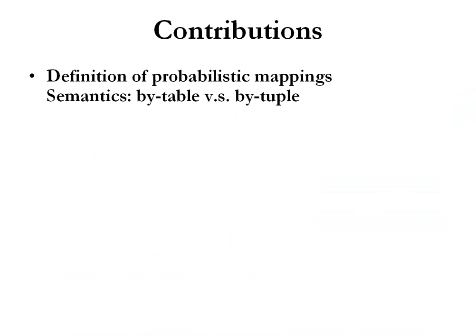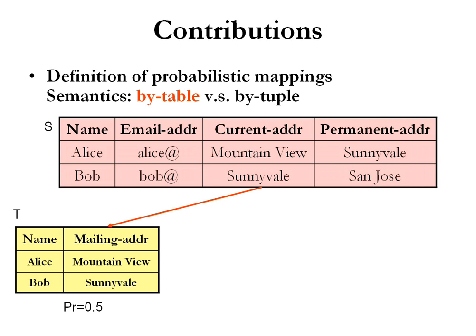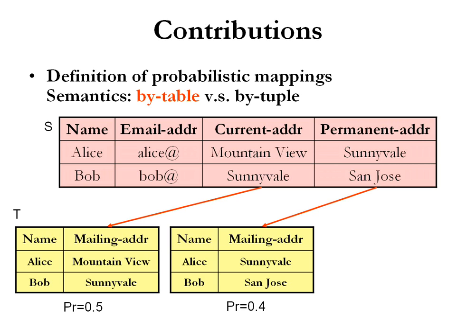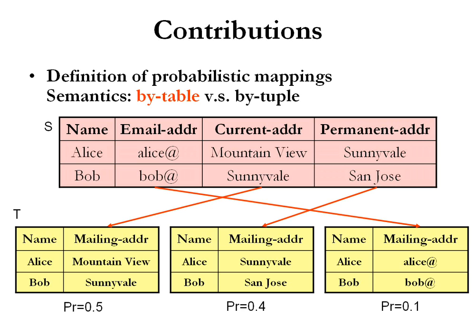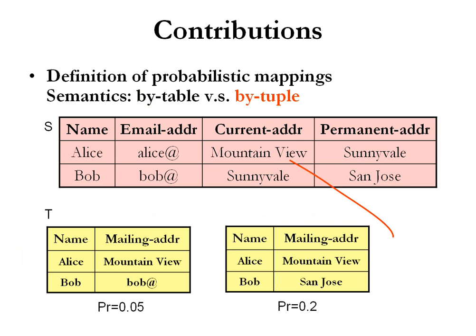This paper formally defines probabilistic mappings and studies their semantics. We show that there are at least two possible semantics for probabilistic mappings. The first semantics, shown in our example and called by-table semantics, assumes there is a single possible mapping that is correct but we don't know which one it is. The probability of a mapping indicates its likelihood and we should apply a mapping to all source tuples. The second semantics, called by-tuple semantics, assumes there is no single mapping that can apply to all source tuples. A different mapping can apply to each tuple according to the probability given to the mapping.